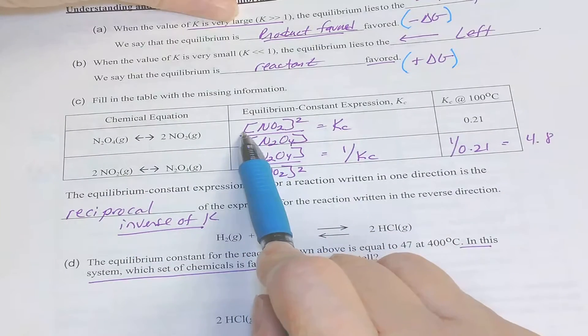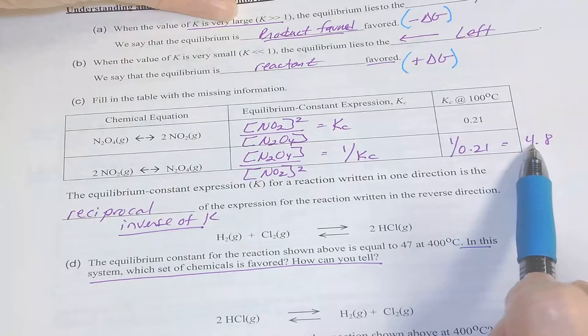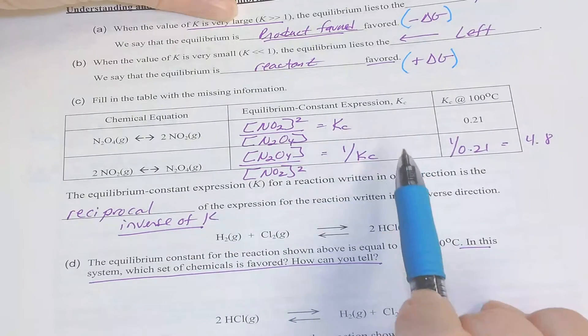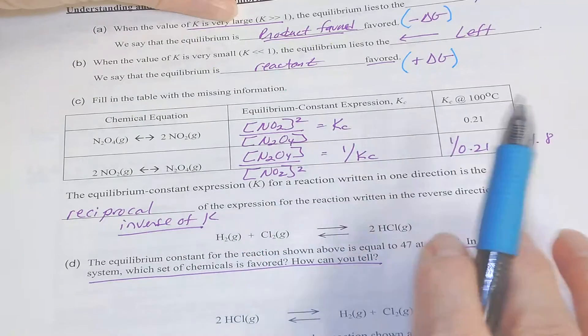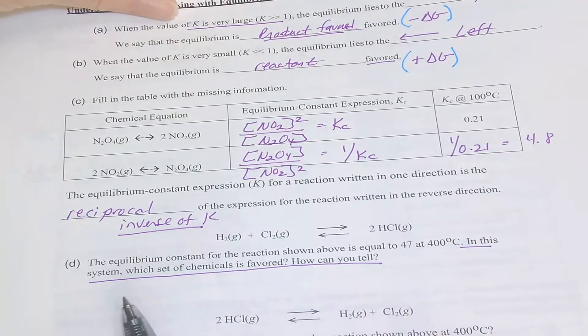If this is the K going forward, then the K going reverse will be, if this is a small K, the reverse K will be larger. Very similar to your spontaneous delta G's. If they are spontaneous in the forward direction, they will be non-spontaneous in the reverse.